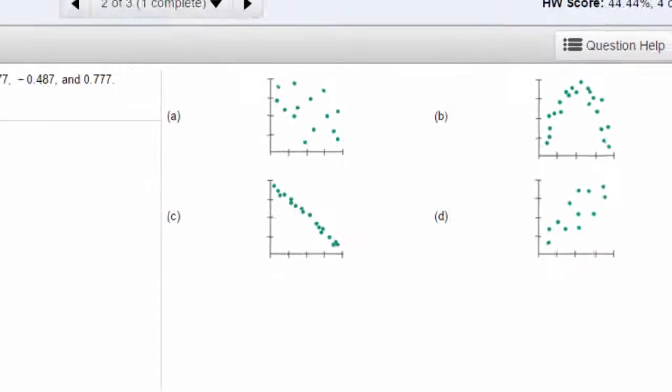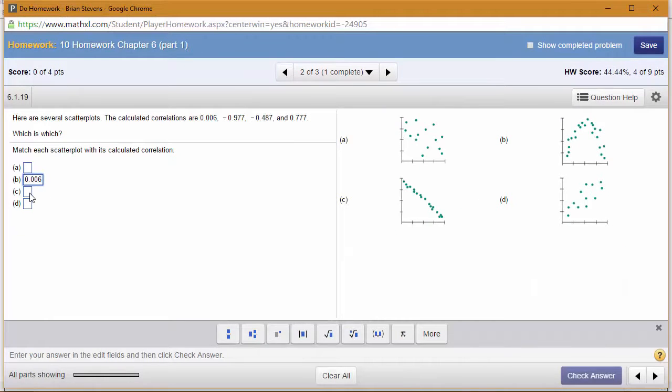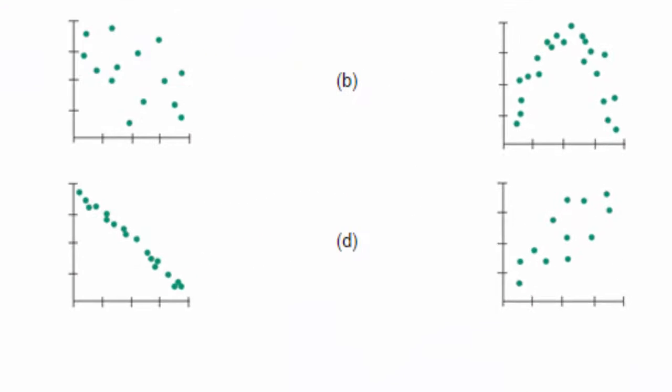Let's go ahead and give it the strongest negative linear correlation that we got, because I don't see anything that beats it out. Next, let's do the other negative one. Well, this one, A, is negative, so it has to be the only other negative. It's a weaker, negative, somewhat linear correlation. It's scattered, but it's still got something going on.